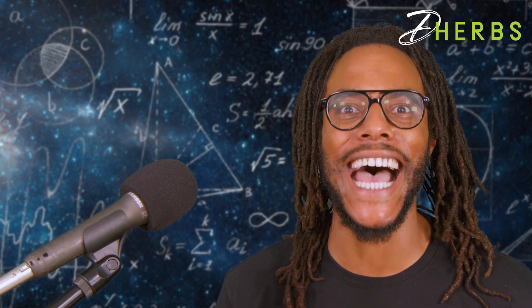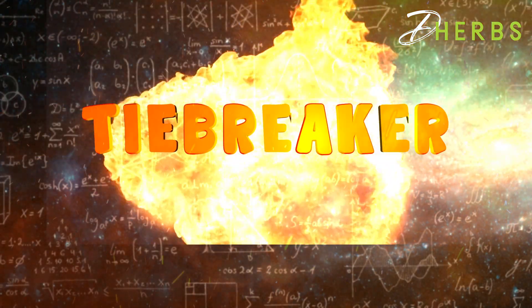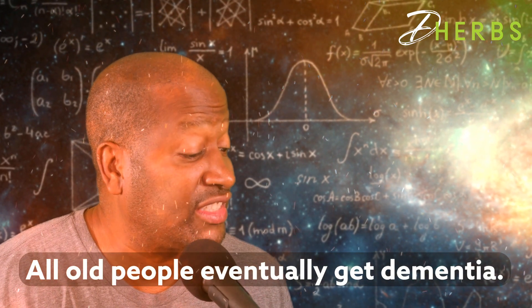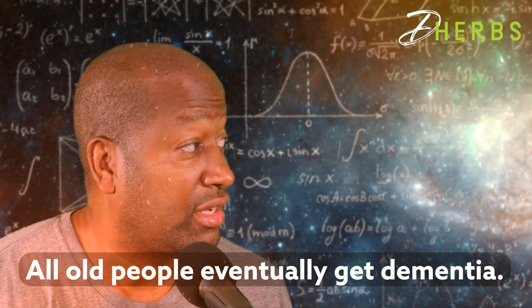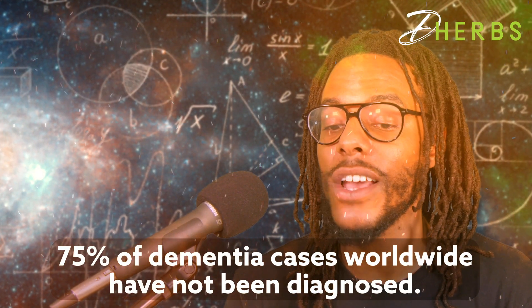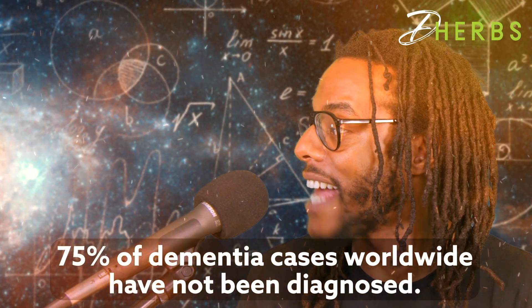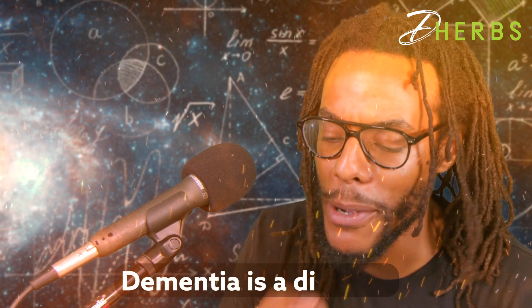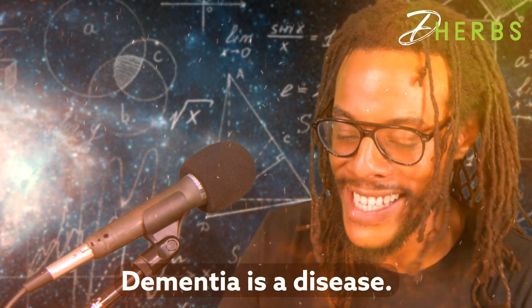Overtime. So we're going to read the question and we're going to say one, two, three, and announce our answer. All old people eventually get dementia. Fiction. 75% of dementia cases worldwide haven't been diagnosed. Fact. Dementia is a disease. Fiction.